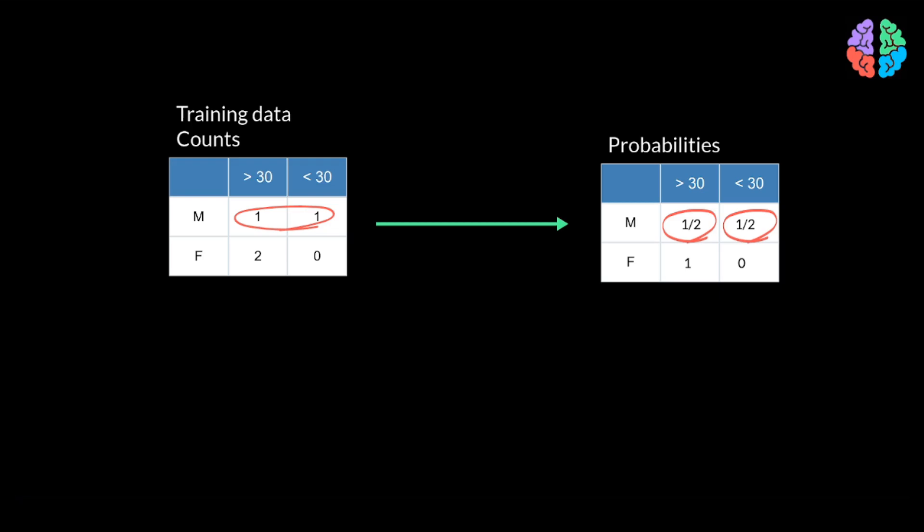Arguing in the same way, if I tell you the person is a female, as per our dataset, there are two females and both of them are aged more than 30. Unsurprisingly, the probability of getting the output as more than 30 is 1. What we have just computed is called the conditional probability distribution.